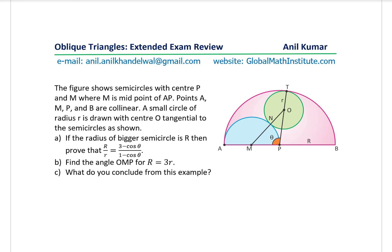The question is: the figure shows semicircles with centers P and M. M is the midpoint of AP. Points A, M, P, and B are collinear. A small circle of radius r is drawn with center O and is tangential to the semicircles as shown in the figure. If the radius of the bigger semicircle is R, then prove that the ratio R over r equals (3 minus cos θ) over (1 minus cos θ), where θ is the angle between MP and O.